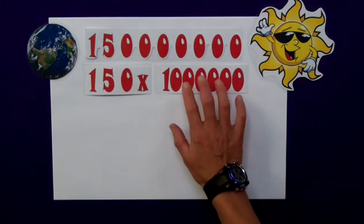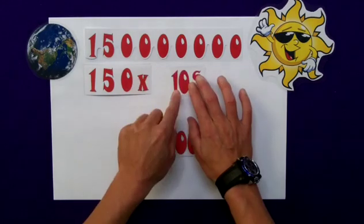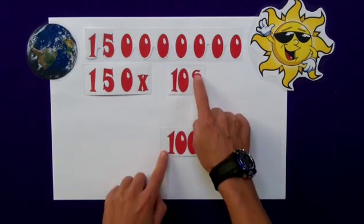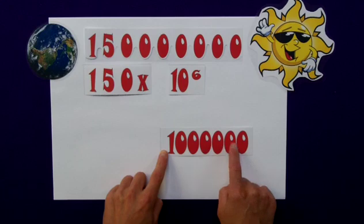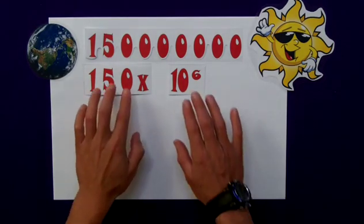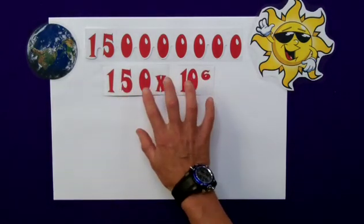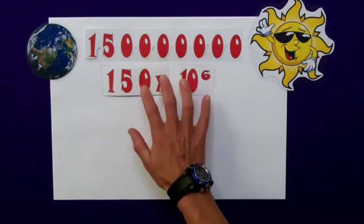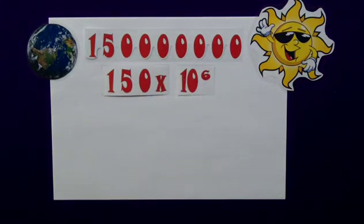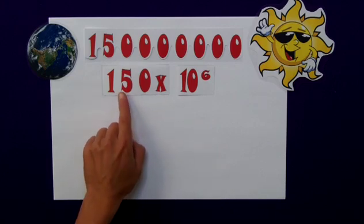Alternatively, I could write 1 million as 10 to the 6, the 6 being indicated by the number of zeros here. There's nothing wrong with that, and indeed that number does match. I've not changed how much I've got, but this doesn't obey the rules of standard index form, which says that this number here has to be between 1 and 10.